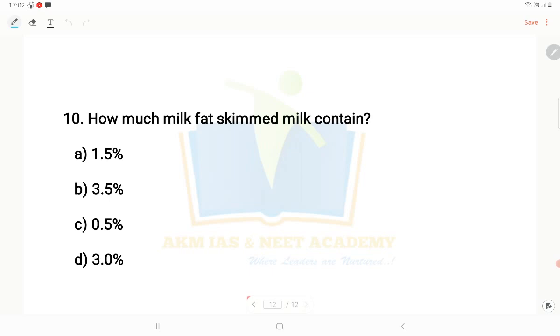Next question: How much milk fat does skimmed milk contain? Options are 1.5%, 3.5%, 0.5%, or 3.0%. Skimmed milk is fat-less milk, so it contains less than 0.5%. That's it for this video, thank you so much.